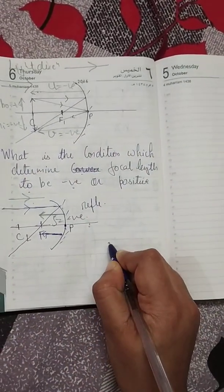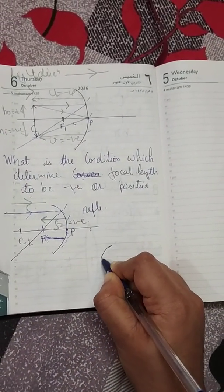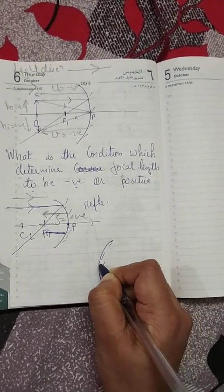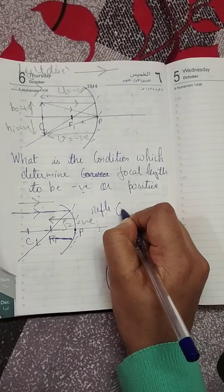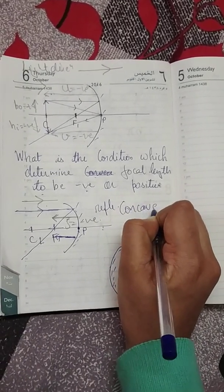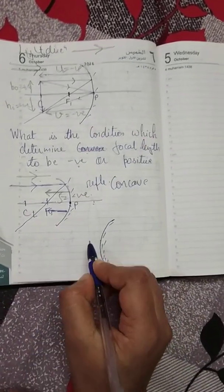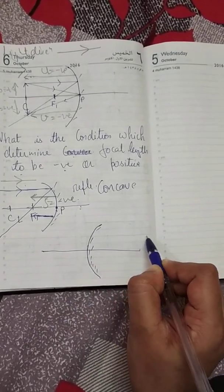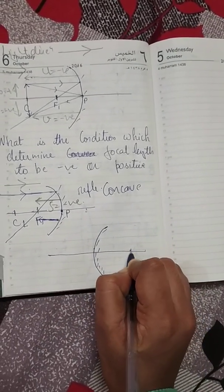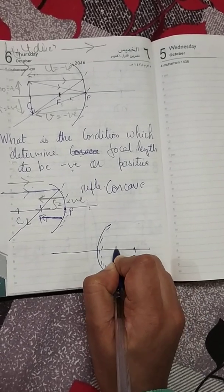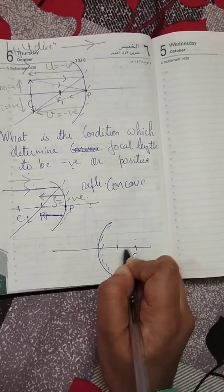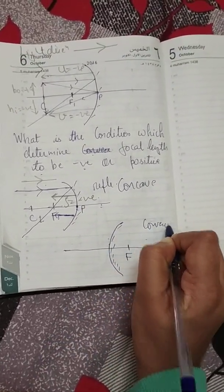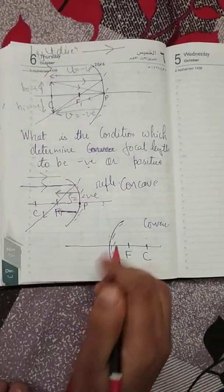Now in case of a convex mirror — a convex mirror looks like this. Compare: a concave mirror is cave-like, going inward. For a convex mirror, if I complete the circle, the center will be here and R/2 will be my focus. So this is my convex mirror.